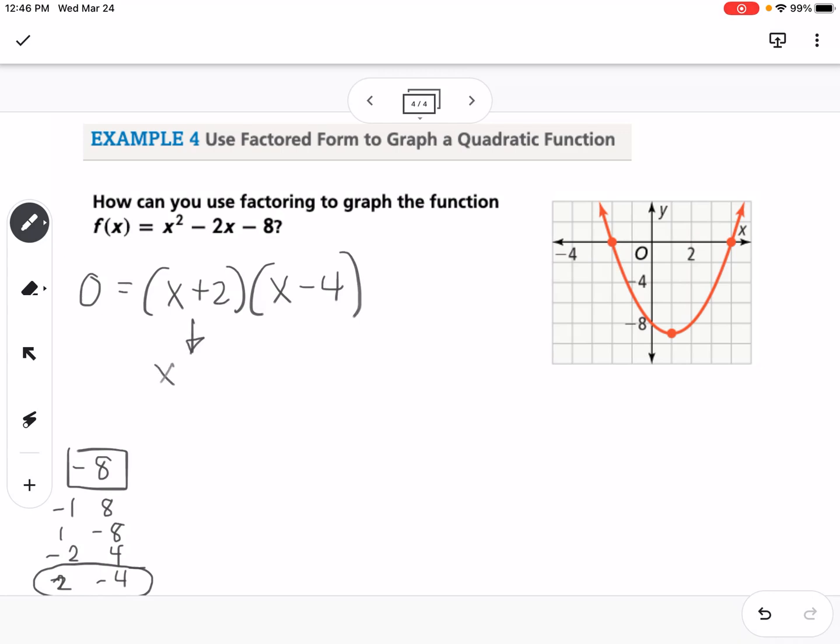If I set each of these equal to zero, I'm going to get negative 2 and positive 4 as my zeros. What that means is if I go to the graph, I can plot a point at negative 2, and I can plot a point at 4 on the x-axis. So that gives me two points for my graph.